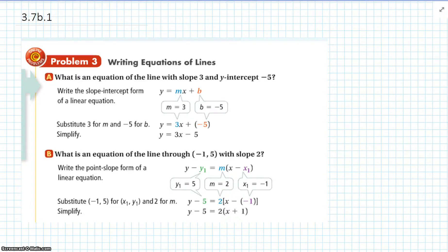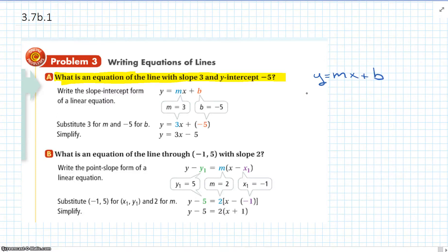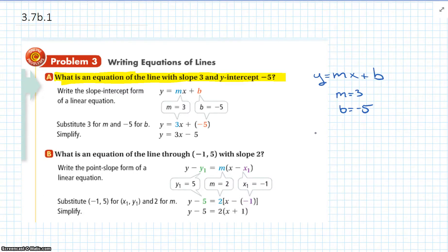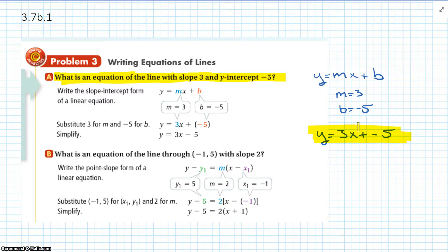Now they're going to change it on us a little bit and give us a slope and a y-intercept and say: what is the equation of a line with a slope of 3 and a y-intercept of negative 5? Well, if you remember, we learned y equals mx plus b, where m is our slope and b is our y-intercept. So if they gave us a slope of 3, our m is 3, and a y-intercept of negative 5, our b is negative 5. We just plug it in: y equals 3x plus negative 5, or rewritten, y equals 3x minus 5.